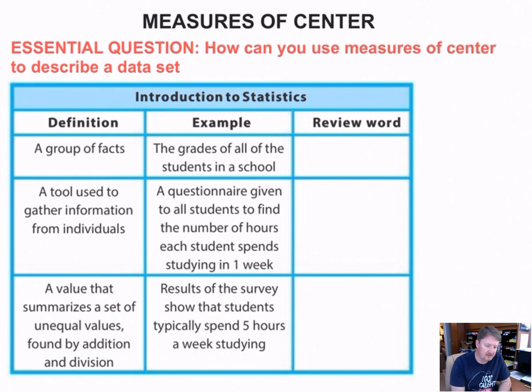Our essential question is: how can you use measures of center to describe a data set? First, let's review some words you should have learned last year. A group of facts, like the grades of all students in a school, is called data. A tool used to gather information from individuals, like a questionnaire given to students to find the number of hours each student spends studying in a week, is a survey.